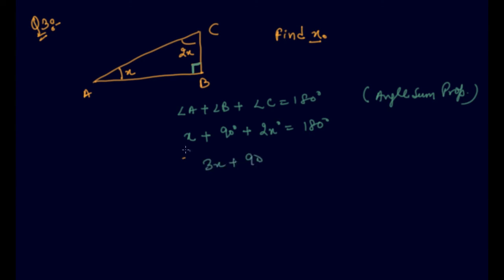This is 3x plus 90 equals 180 degrees. When I take the value of 90 to the right hand side, I can write 180 minus 90. So 3x equals 90. The value of x will come out to be 90 divided by 3, this is 30 degrees.